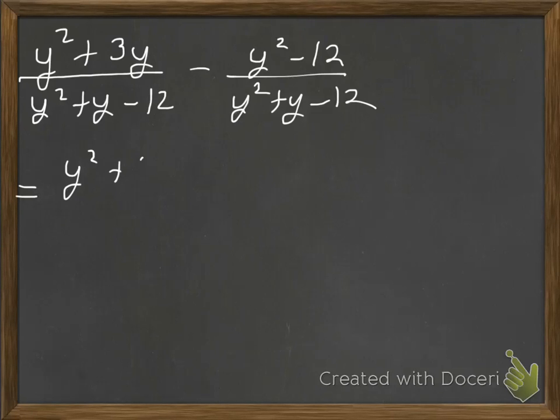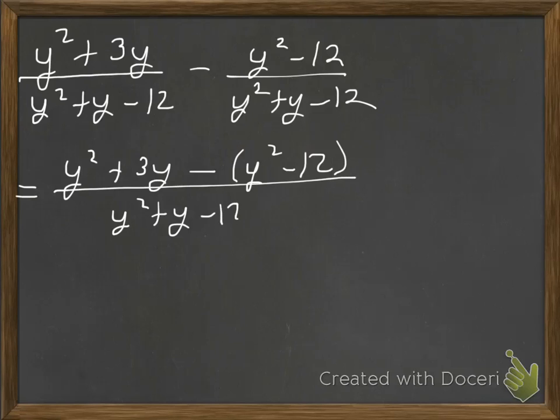We have y squared plus 3y minus parentheses y squared minus 12. And usually what happens is the minus sign will get applied to the y squared, but then we'll accidentally forget to apply it to the minus 12. And I don't want you to make that mistake. So if we put these parentheses there, it helps remind us that both things are being subtracted. Then we got y squared plus y minus 12. So we'll combine like terms after we distribute. So y squared plus 3y minus y squared plus 12.